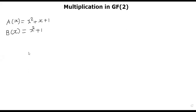Hello. Welcome back. In this segment, I will talk about how to multiply two polynomials in Galois field 2, GF(2). Let's take an example first. Let's say A is a polynomial x² + x + 1, and B is a polynomial x² + 1. Our goal is to find A times B. How to do this using a program is what I'm going to talk about, but I wanted to give you an informal intuition first before going to programming.